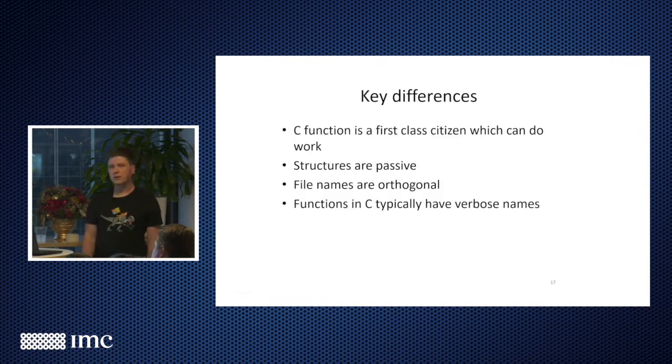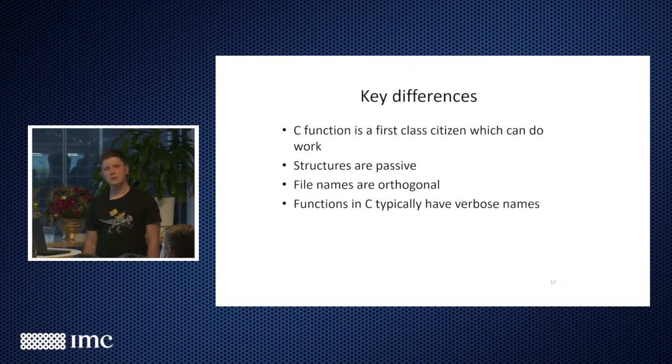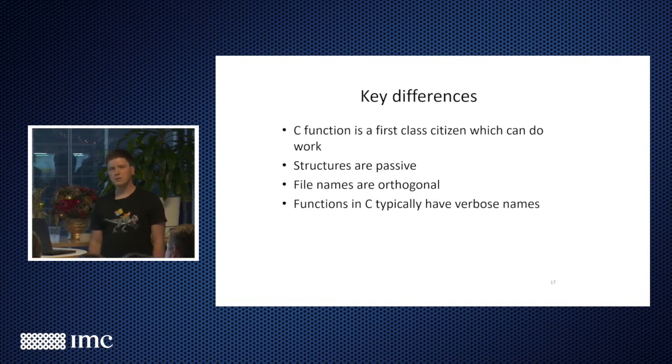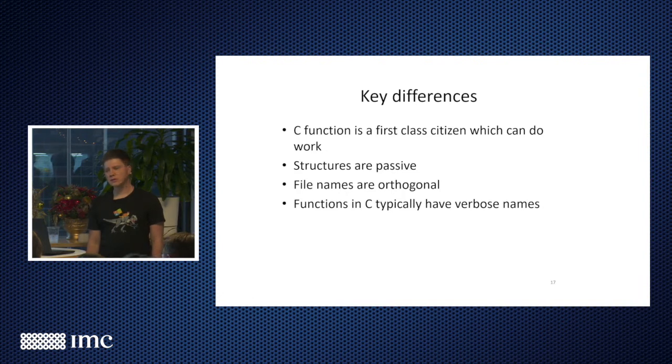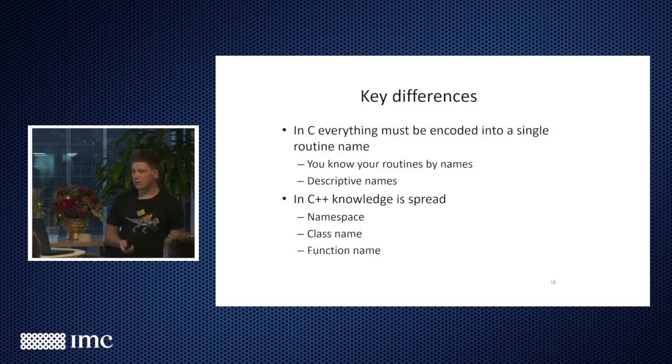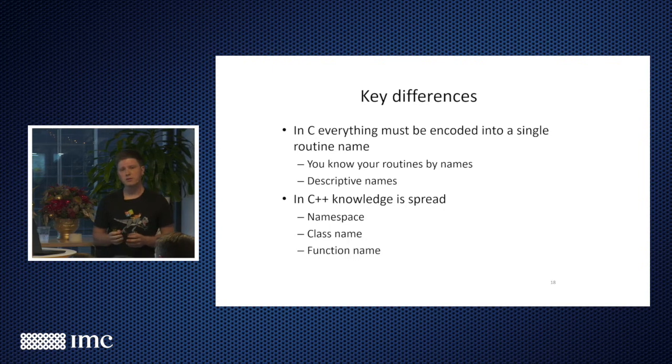So a few things to notice here. In C, function is a first-class citizen which does work, because structures are passive, they can't do work. And file names just hold code. They don't represent anything. And an interesting result is functions in C++, because this is the only thing which does work in C, they have very verbose names, because you need to encode a lot of information in there. While in C++, meaning is spread. So you have namespace, which holds a meaning. You have class name, which holds a meaning. And you have function name.